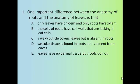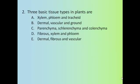Question 2: The three basic tissue types in plants are — A) xylem, phloem, and tracheids; B) dermal, vascular, and ground; C) parenchyma, sclerenchyma, and collenchyma; D) fibrous, xylem, and phloem; or E) dermal, fibrous, and vascular. The correct answer is B — dermal, vascular, and ground. Answer C — parenchyma, sclerenchyma, and collenchyma — those are the three plant cell types.